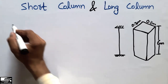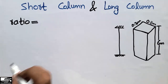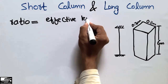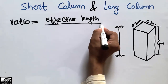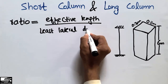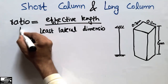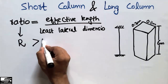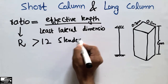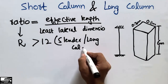The difference between the two types of columns can be categorized by a ratio specified by the Indian Standard. This ratio is the effective length of the column divided by the least lateral dimension of the column, represented by 'r'. When this ratio is greater than 12, we call this type of column a long column or a slender column, as specified by the Indian Standard.